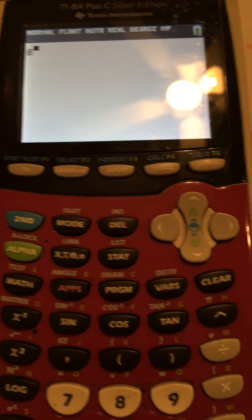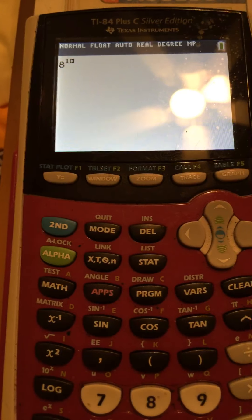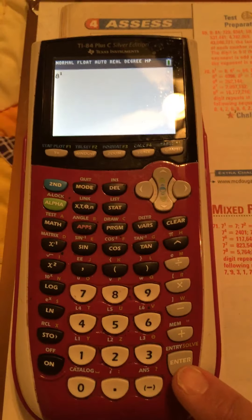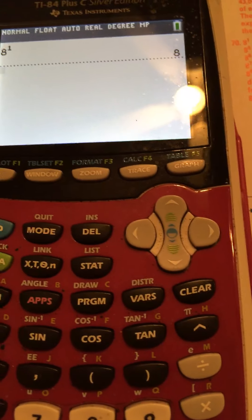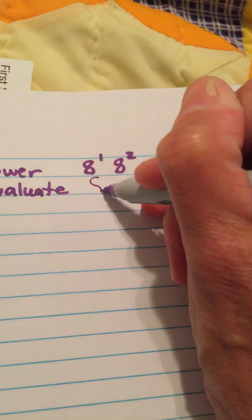And then it's this up arrow right here. That little thing that looks like the roof of the house. I do up arrow, and now I put in 1. And now I hit enter, and it will tell me the answer is 8. So let me get my pencil. And the answer is 8.